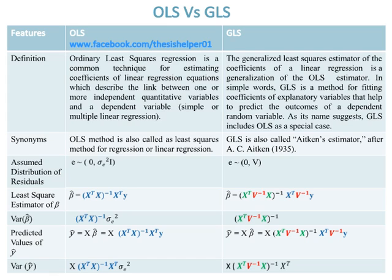By putting the value of Beta Cap in GLS: Y Cap = (X^T V^(-2) X)^(-1) X^T Y. While the predicted values of Y Cap in GLS are equal to the product of X and Beta Cap. By substituting Beta Cap in OLS: Y Cap = X (X^T V^(-1) X)^(-1) X^T Y.